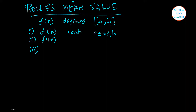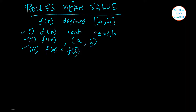Then f'(x), that is f(x) should be differentiable in the open interval of a and b, and f(a) must be equal to f(b). Then this theorem states that if all these three conditions are satisfied, then there will be a point named c such that c will lie between a and b for which f'(c) will be equal to 0.